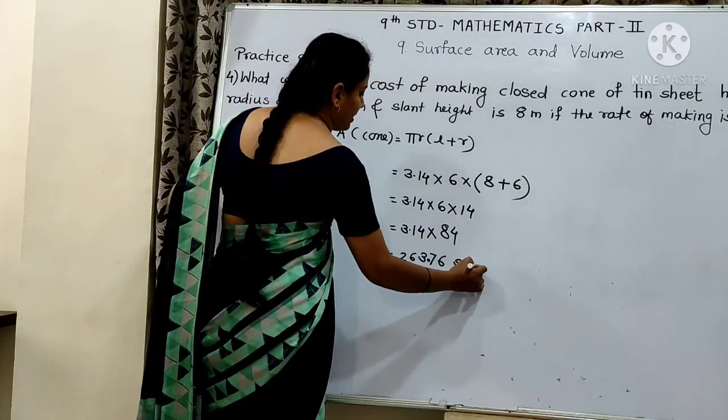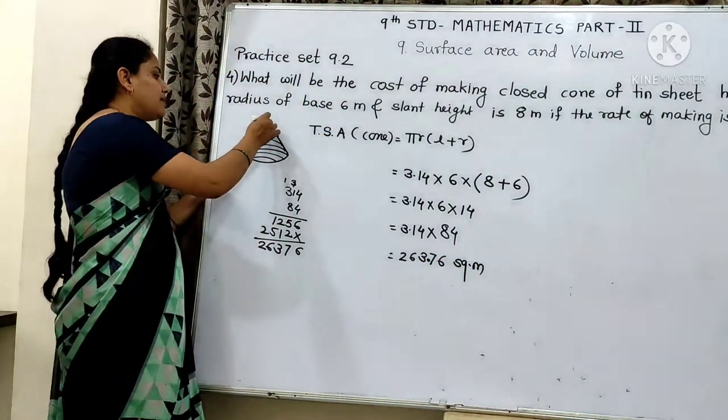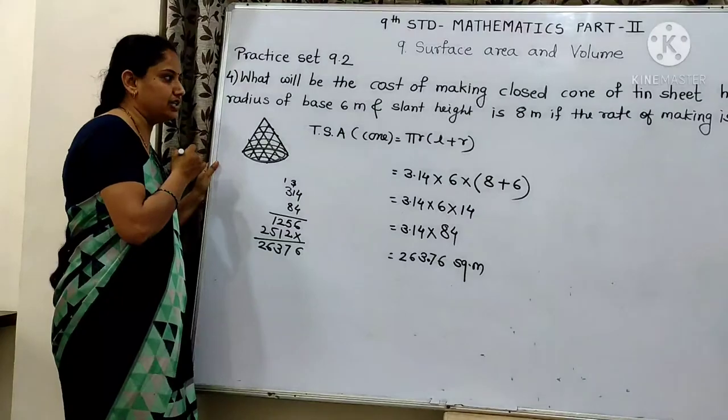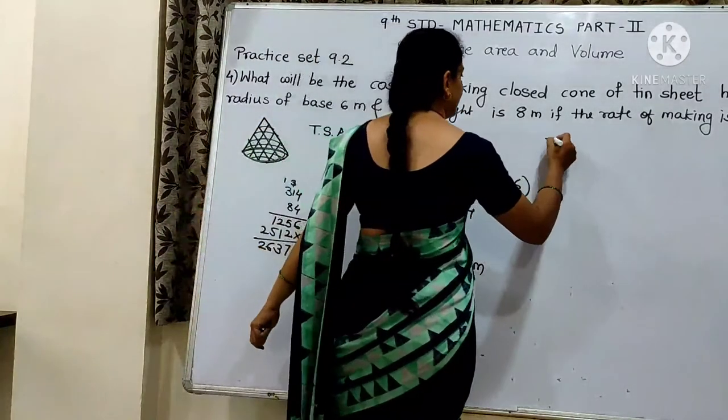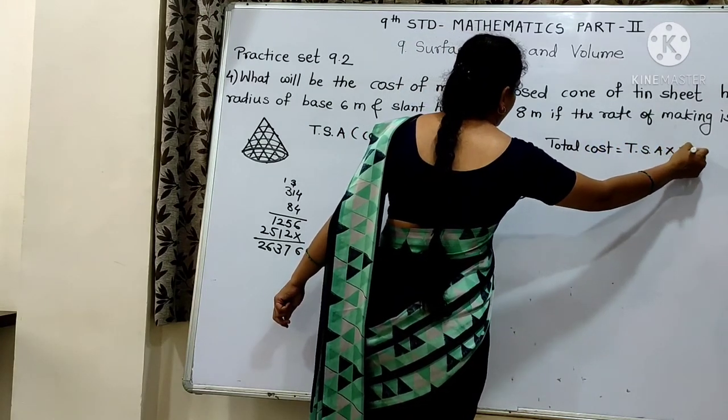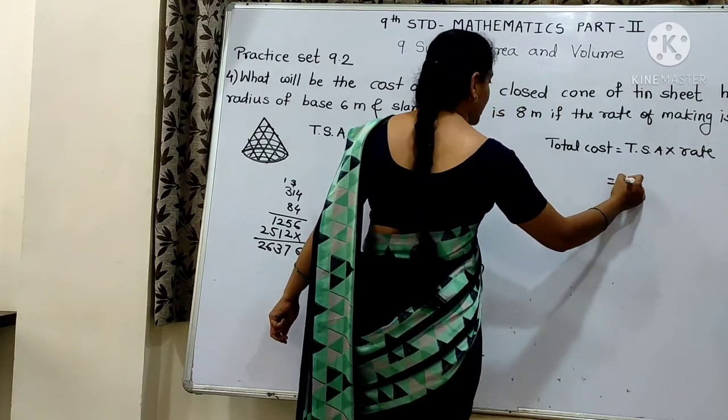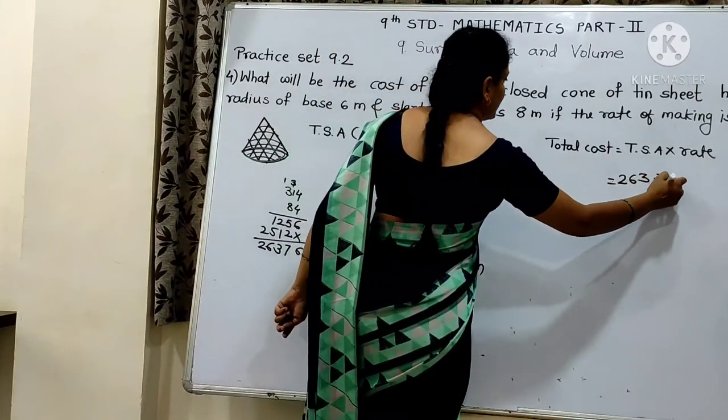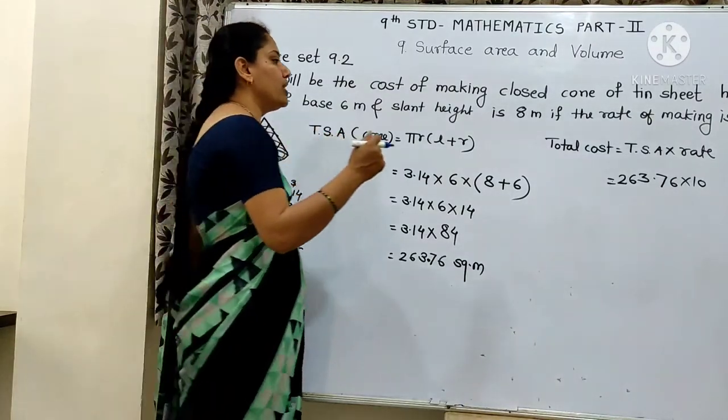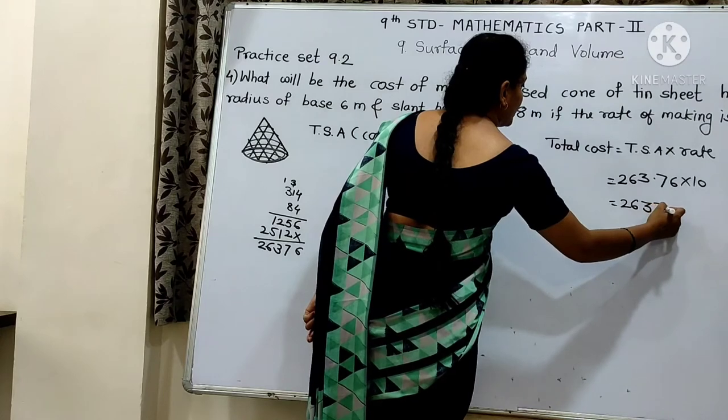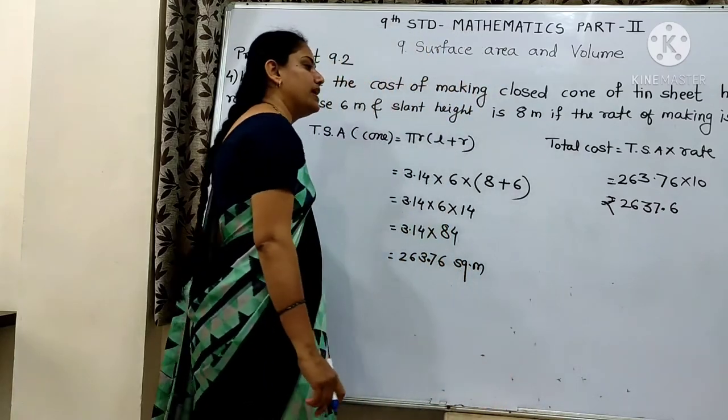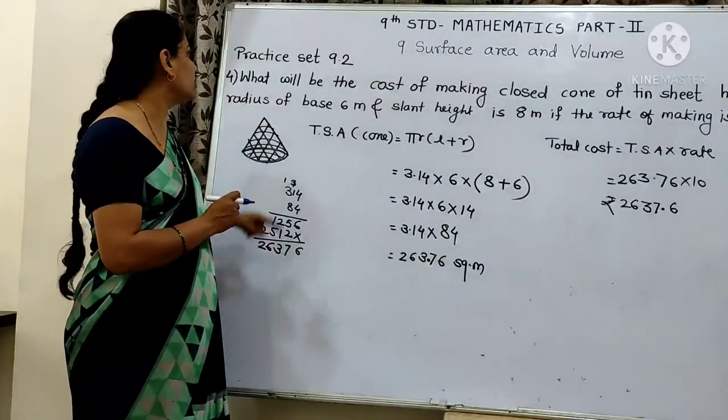The rate of making is rupees 10. So 263.76 we will multiply by 10. So that will be rupees. The answer is 2637 rupees 60 paise. That will be the cost of making, total cost of making.